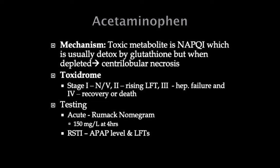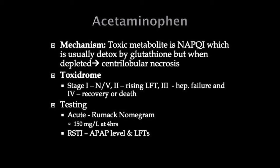For acute overdoses, use the Rumack-Matthew Nomogram. If you want to memorize it, at four hours their level needs to be less than 150 mg/L — that's the threshold. For repeat supratherapeutic ingestions — like grandma taking 6 grams per day for a week — check acetaminophen level and LFTs. Both need to be normal to rule out a chronic overdose. The nomogram was based on observation: people above the line all died, people below the line all lived. The initial line was at 200, but the FDA wanted a more conservative value so they dropped it to 150.